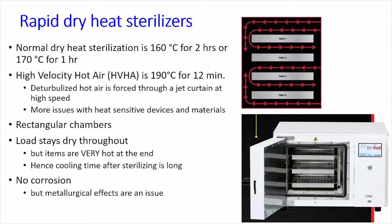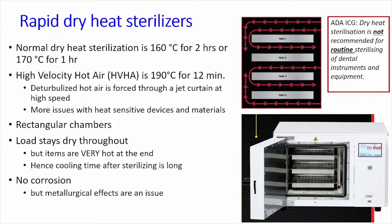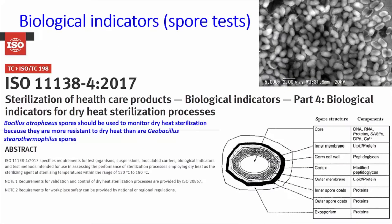While there is no moisture present and the likelihood of corrosion is very small, there are metallurgical effects — for example, on the temper of different metals — because of the temperature. For these reasons, around the world including in Australia through Australian standards, ADA guidelines, and the CDC, there is a general position against using dry heat. The ADA infection control guidelines state that dry heat is not recommended for routine sterilization of dental instruments. When dry heat units are used, a different biological indicator is needed: Bacillus atrophaeus rather than the normal Geobacillus stearothermophilus.